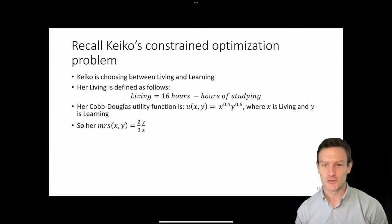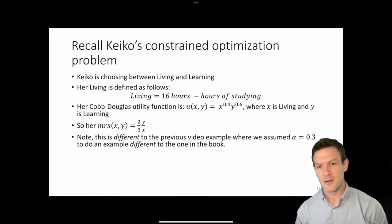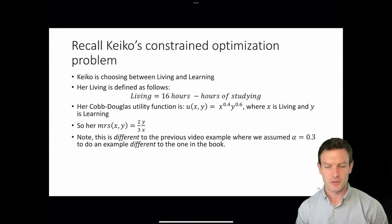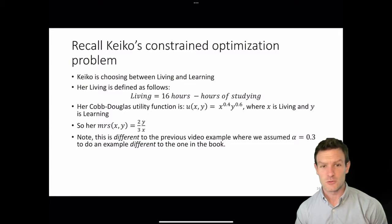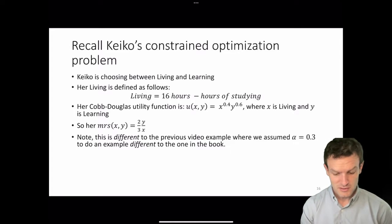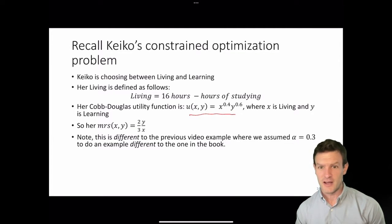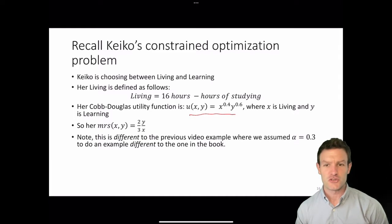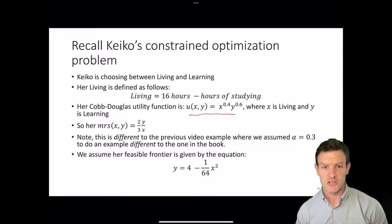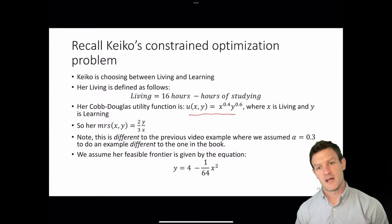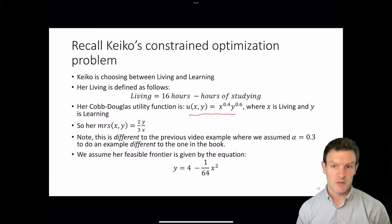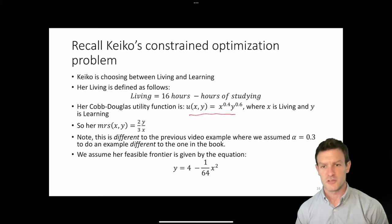Note that this is a different value from the previous video, where we assumed alpha equals 0.3 to do a different example. Here we return to the textbook example. If you're not sure how to derive that MRS(x,y) = (2/3)(y/x), take this utility function and work it out as practice. Now we assume her feasible frontier is given by y = 4 - (1/64)x², which comes from the production function for studying into learning. This is her feasible frontier in terms of living and learning.